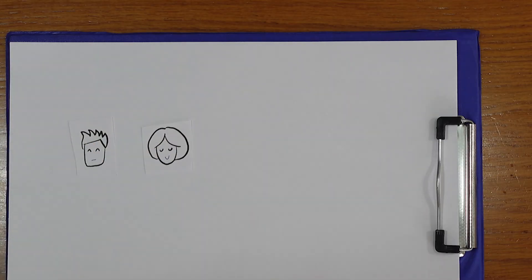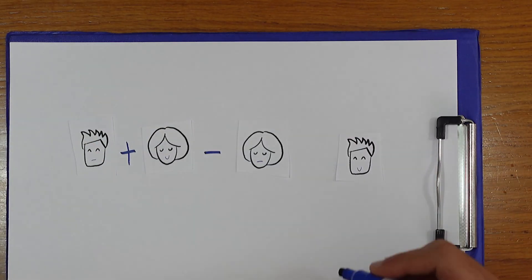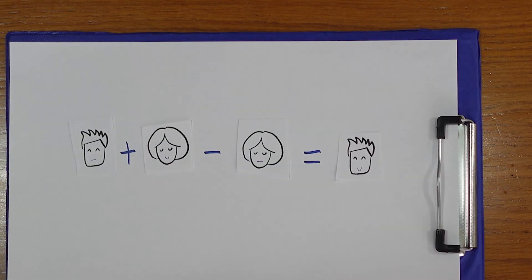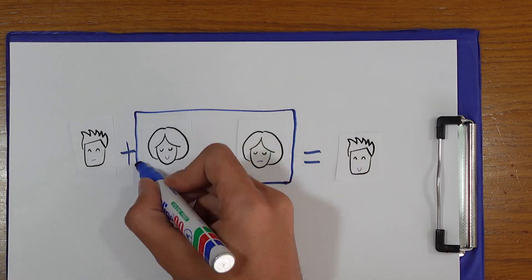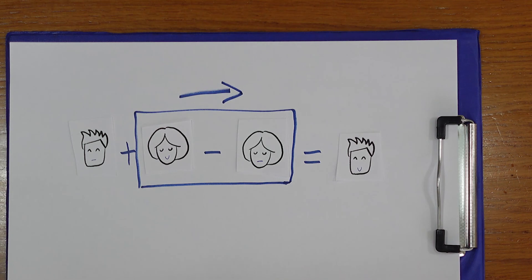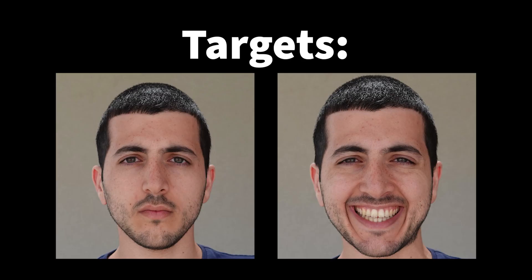I took a few shots of my face, trying to control for the various features and encoded them using StyleGAN. The idea is that by comparing a picture of a neutral face with a picture of a smiling one, I can find the direction of change that would generalize to other faces. Unfortunately, StyleGAN doesn't really like my face.